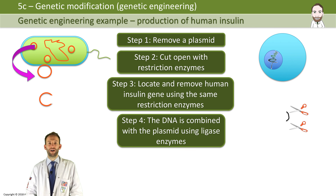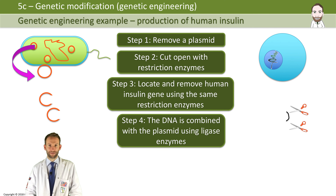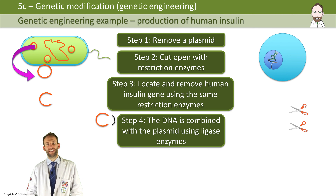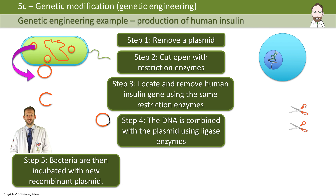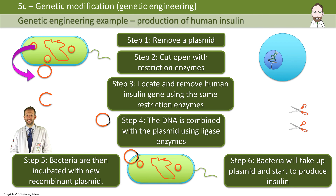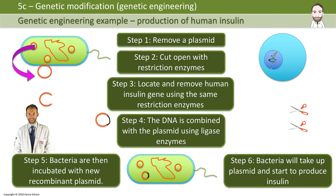Step four, combine that insulin DNA with the plasmid using ligase enzymes. Step five, the bacteria are then incubated with the new recombinant plasmid and they take it up. The bacteria will then start to produce the insulin. You can then get that bacteria to reproduce and it will pass that gene on to all the other bacteria.